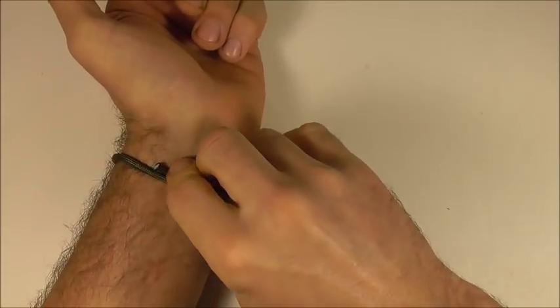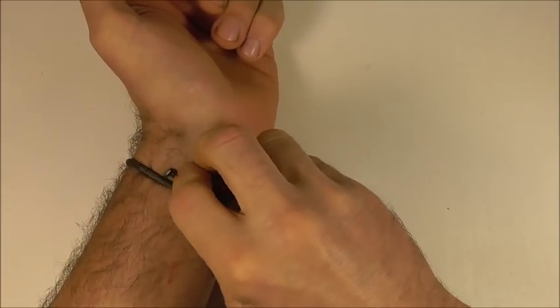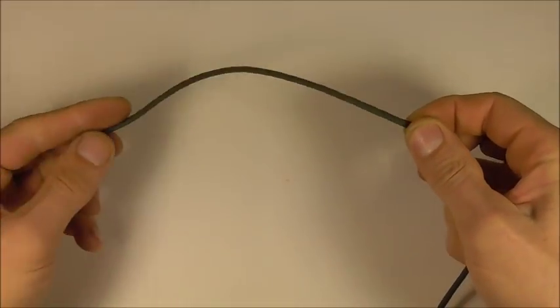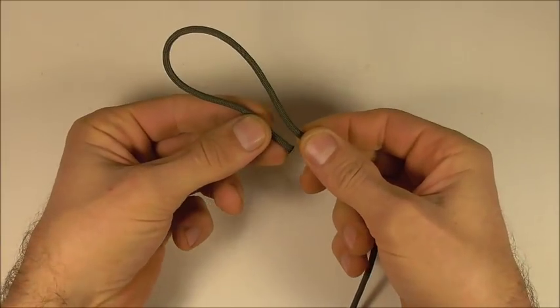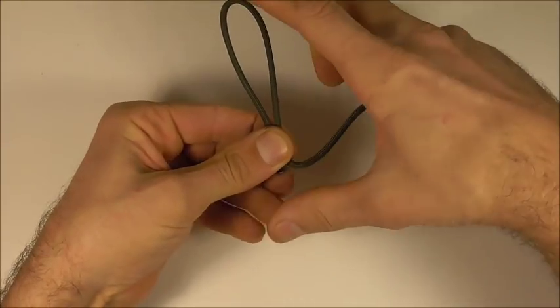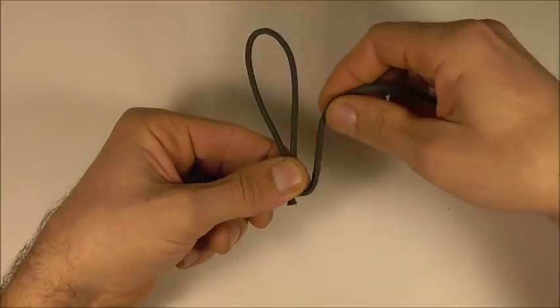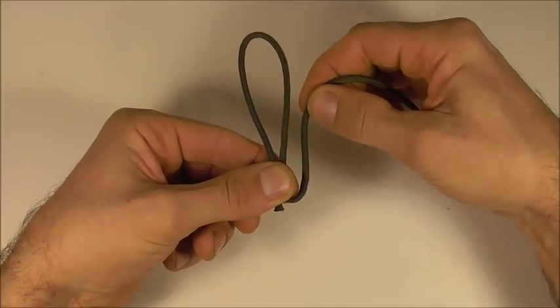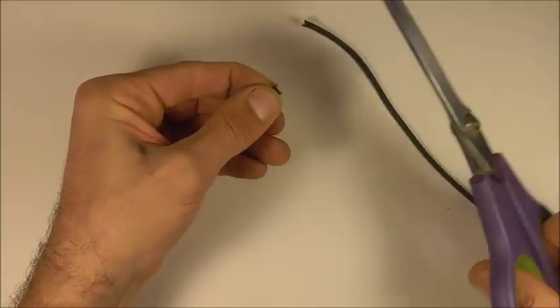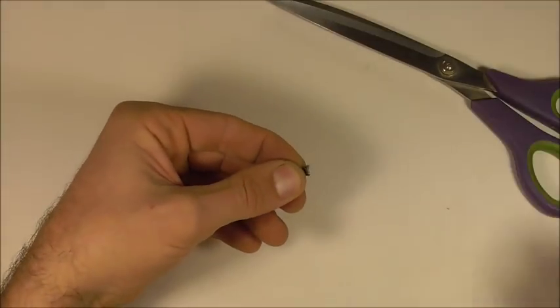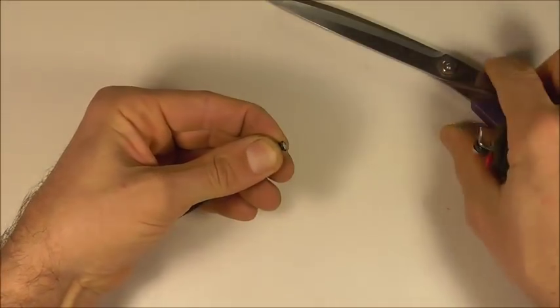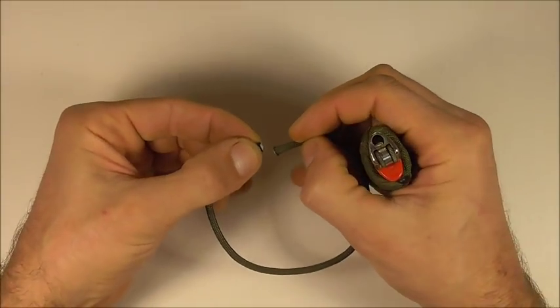Then just pinch it off and fold that piece of paracord over. We want to add just another little bit, so go halfway along this length here and just pinch it off at that section and cut that piece off. Give it a quick singe.